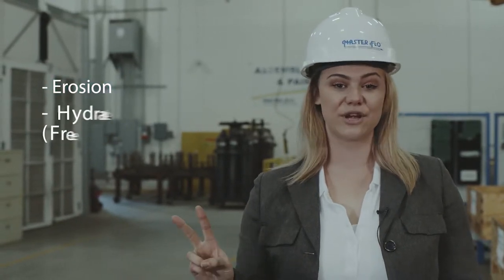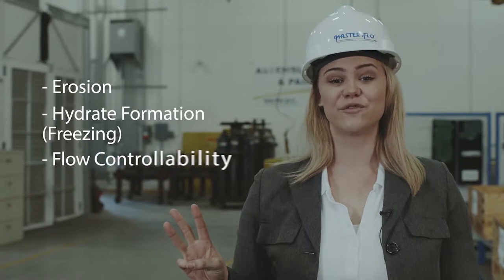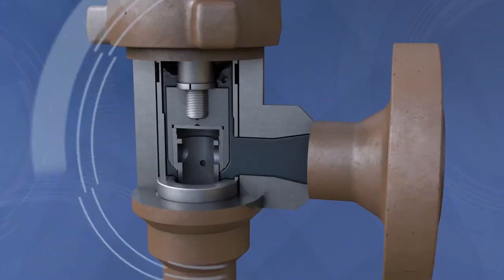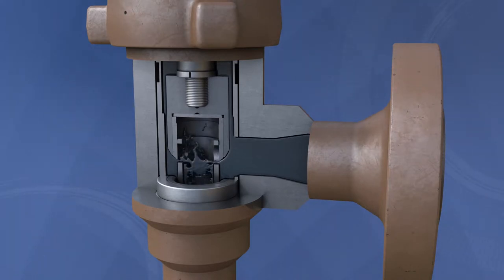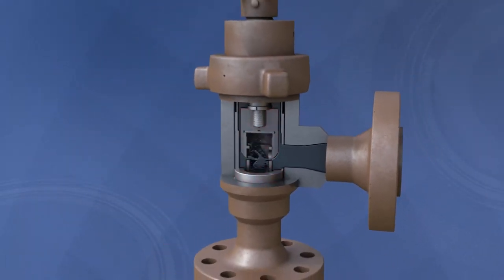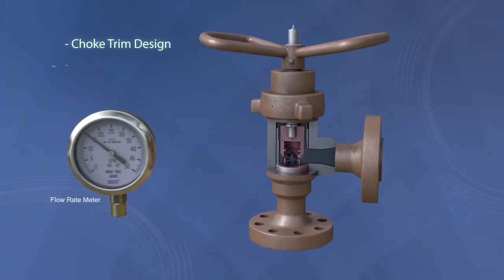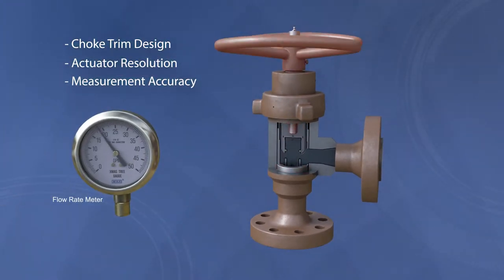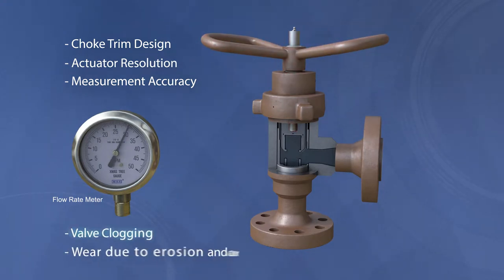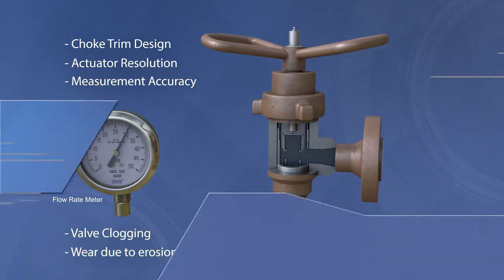All choke valves face three main problems: erosion, hydrate formation or freezing, and flow controllability. The flow rate is controlled by restricting the flow to a small opening or orifice. The degree and level of control depend on three main factors: choke trim design, actuator resolution, and measurement accuracy. Other factors include valve clogging and wear due to erosion and corrosion.